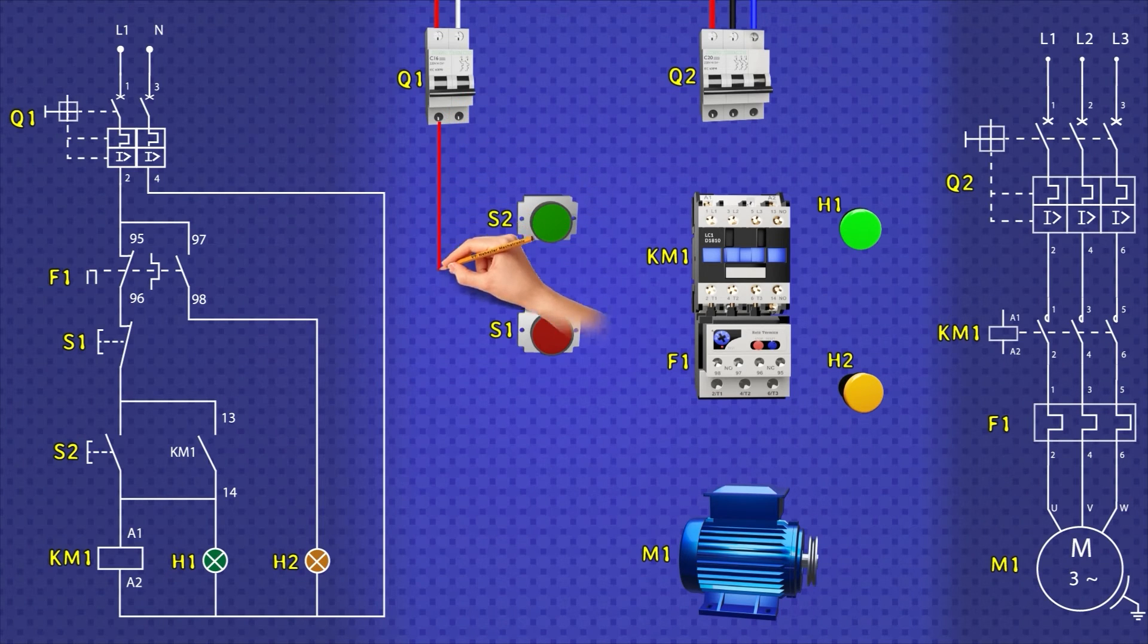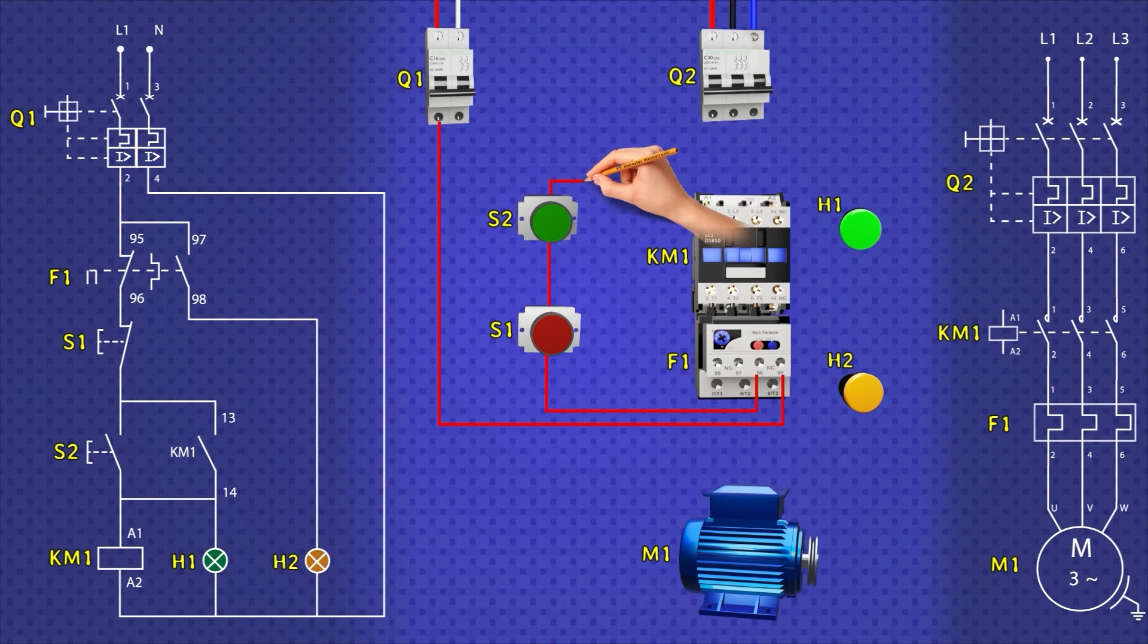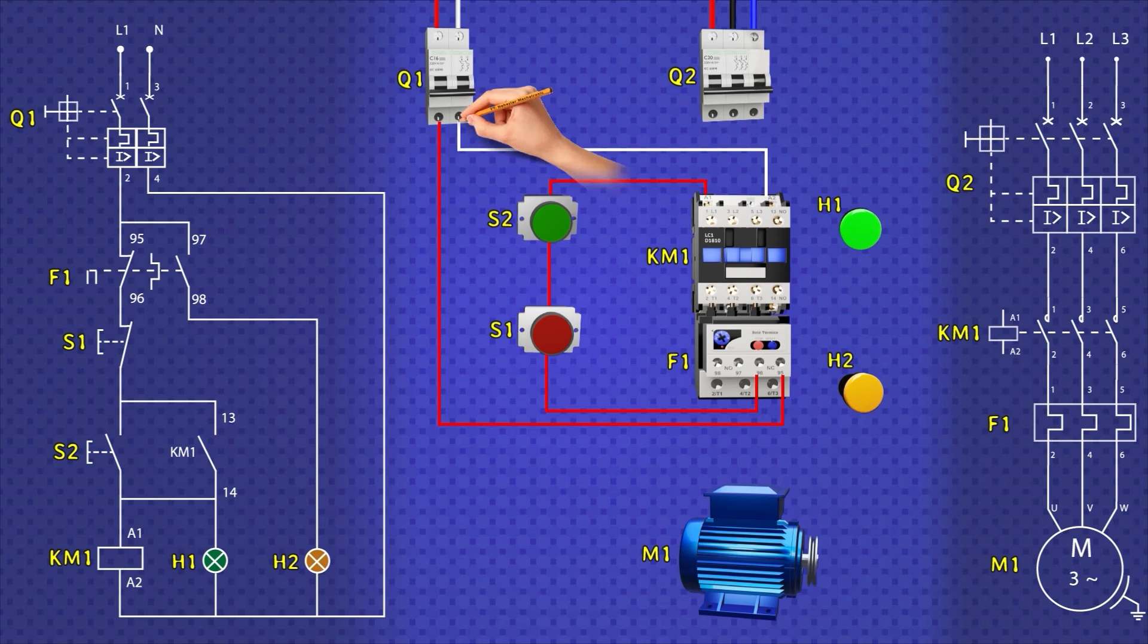I am going to hide the lines of force for a moment to focus on the command part. From switch Q1, it will be connected to terminal 95 of the thermal relay. From its output, which is terminal 96, it is taken and connected to the stop button S1. Now to the start button S2. From the output of this button, it is carried and connected to terminal A1 of the contactor coil. And from terminal A2, it comes out and is brought back to the two-pole thermomagnetic switch. Note that the red cable indicates phase or line 1 and the white cable is for the neutral. We continue. We connect from between the buttons and take it to terminal 13 of the contactor. From terminal 14, we carry and connect to terminal A1.